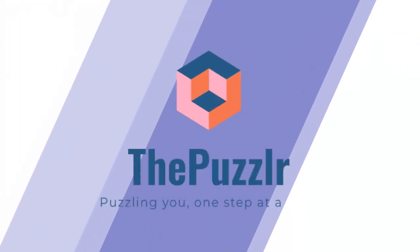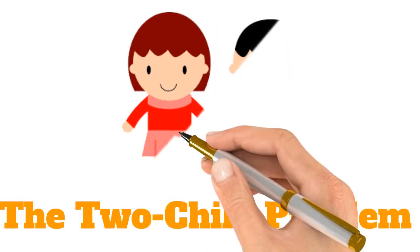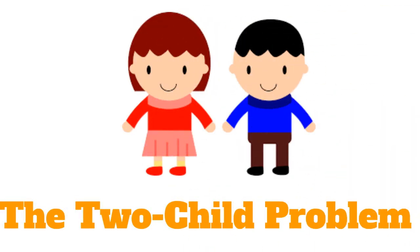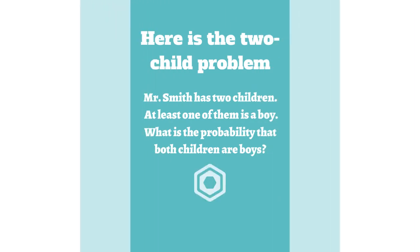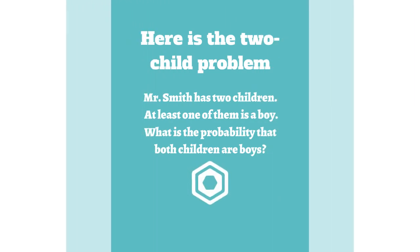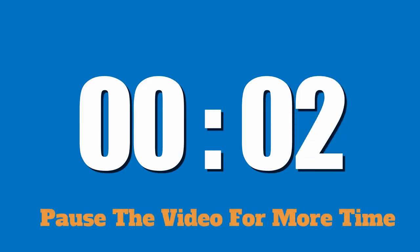This episode is brought to you by thepuzzler.com. In this video, we take a look at the two-child problem. Here's the two-child problem: Mr. Smith has two children. At least one of them is a boy. What is the probability that both children are boys? Pause the video for more time.